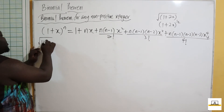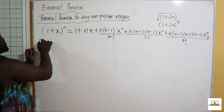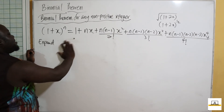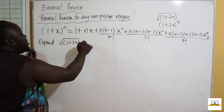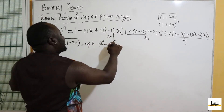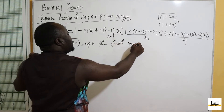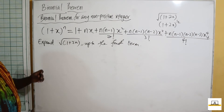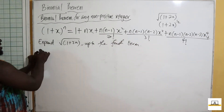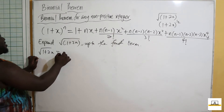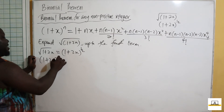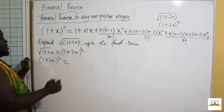Let's expand the square root of (1+2x) up to the fourth term. We write √(1+2x) as (1+2x)^½. Expanding, the first term is always one.